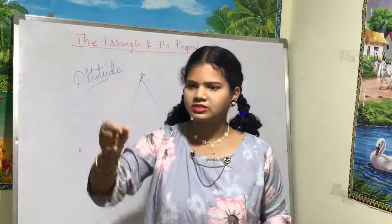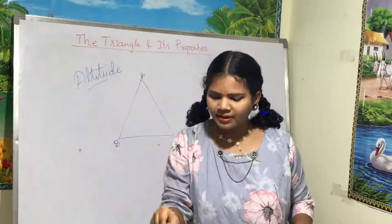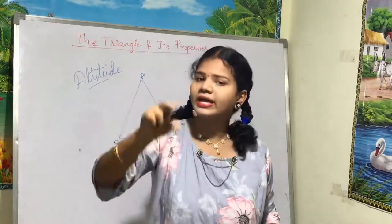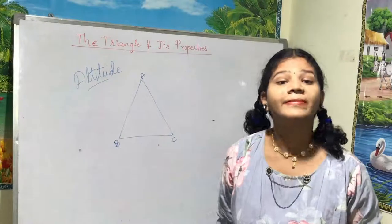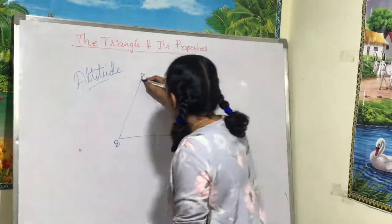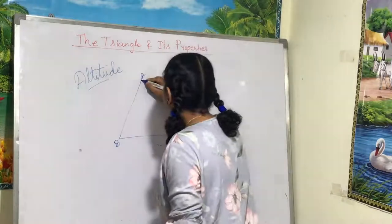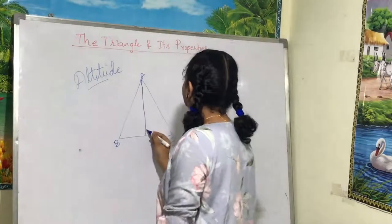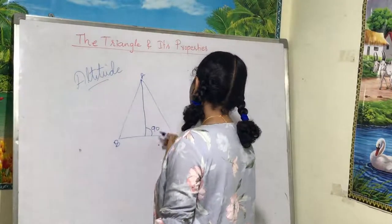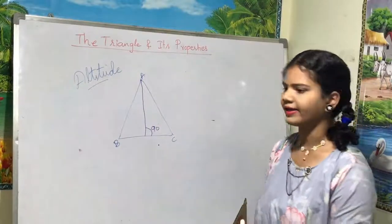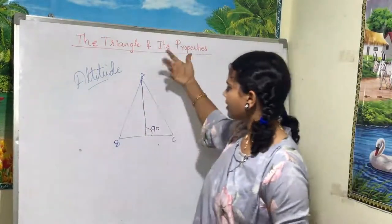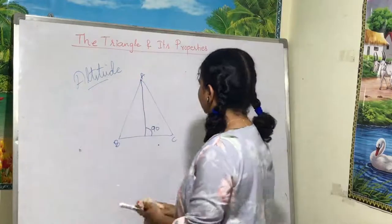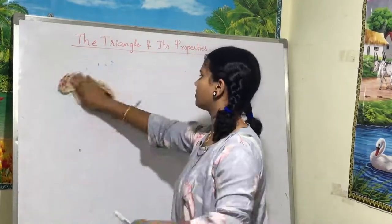The line starts from the vertex, but it must make a perpendicular line. This perpendicular line must be exactly 90 degrees — a right angle. So altitude starts from the vertex to make a perpendicular line of 90 degrees. This is what is meant by altitude.